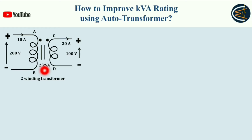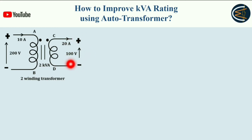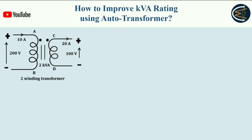So as you can see, this is a two-winding transformer — the normal transformer. The primary side is the high voltage side at 200 volts, and the secondary side is 100 volts. The rating is 2 KVA. For a rated load, the primary side current will be 10 amperes and the secondary side rated current will be 20 amperes.